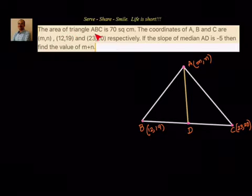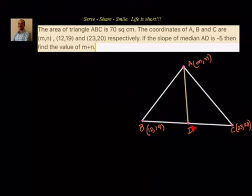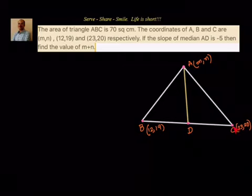The area of triangle ABC is 70 square centimeters. The coordinates of A, B, C are M comma N, 12 comma 19, and 23 comma 20 respectively. If the slope of median AD is minus 5, then find the value of M plus N.